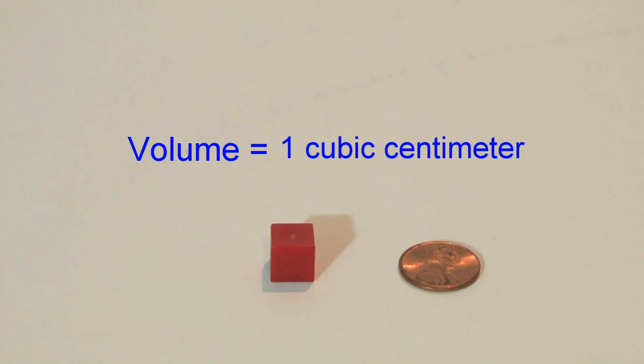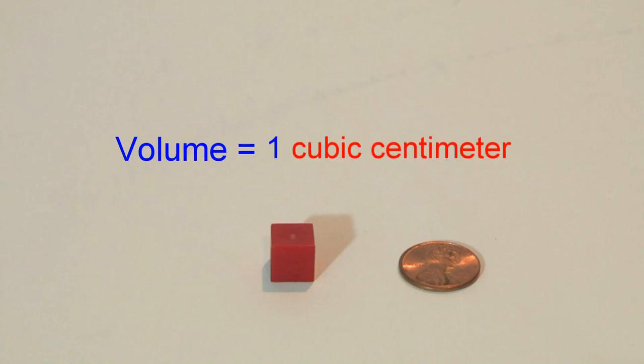The cubic centimeter can be expressed in three different ways. First, you can spell out cubic centimeter as you see on the screen. A second way to write cubic centimeter is by using the expression CC, which is simply the first letter of both words.